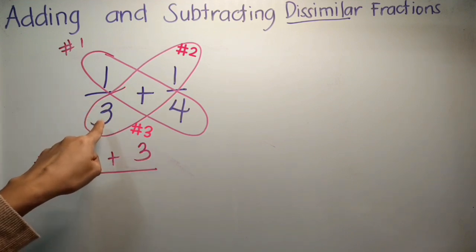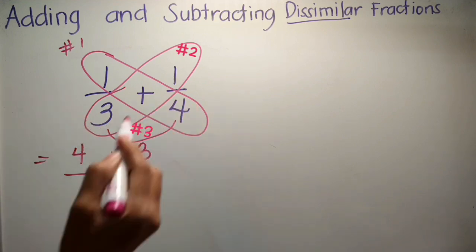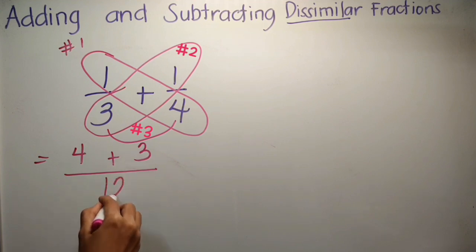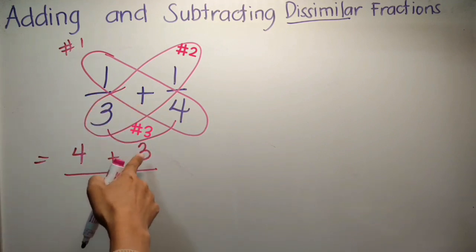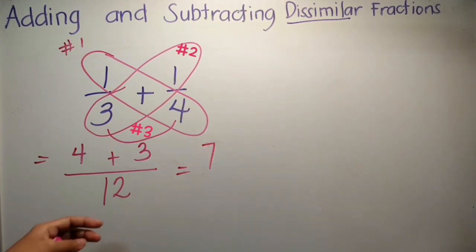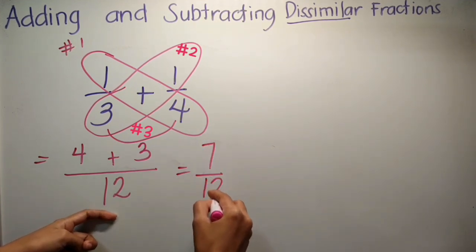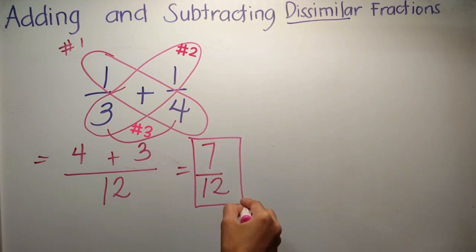And then you copy that one. Next, i-multiply mo naman ang denominator ng nilang dalawa. So 3 times 4 ay 12. Now, pwede mo na silang i-add. So 4 plus 3 equals 7, and copy the denominator. So 7 twelfths. Ang sagot mo dyan ay 7 twelfths, at ang 7 twelfths ay nasa lowest term na, kaya yan na yung final na sagot.